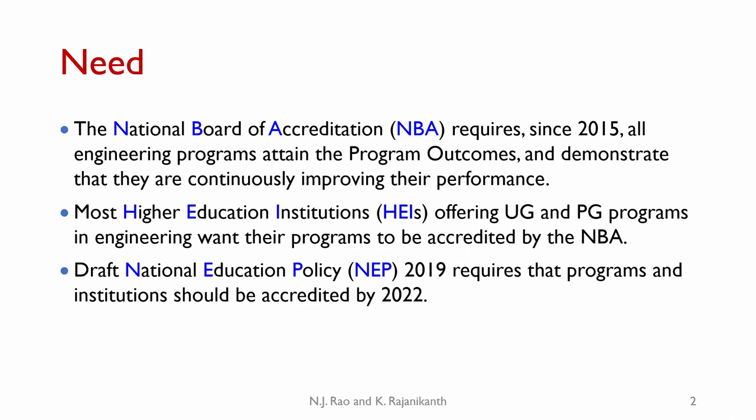The NBA has identified 12 program outcomes that all graduates of UG programs in engineering should attain. Since 2015, the NBA requires that all UG programs demonstrate that graduates have attained these program outcomes and are continuously improving their attainment.